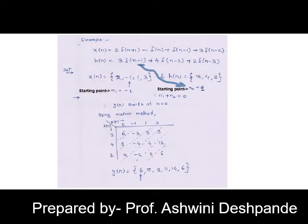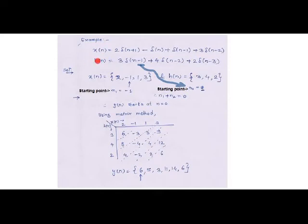Let us perform convolution sum between the given two discrete time sequences. X is given as a shifted form of delta function with varying amplitudes and similar is the case for H.